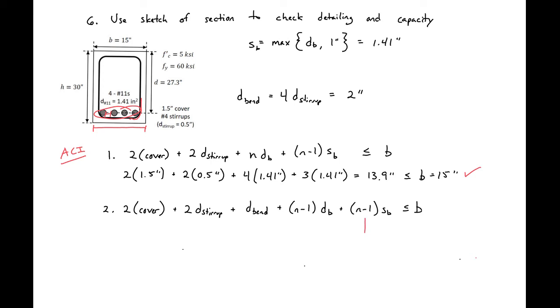Next we can do our second check. Two times our cover, 1.5 inches, plus two times 0.5 inches, plus the diameter of our bend, 2 inches which we found above, plus three times diameter of our bar, 1.41, plus three times the diameter of our bar, 1.41. We'll get a value of 14.5 is our required width, which is less than our width of 15 inches. We're okay here as well. We can fit all of our bars in our available base width.